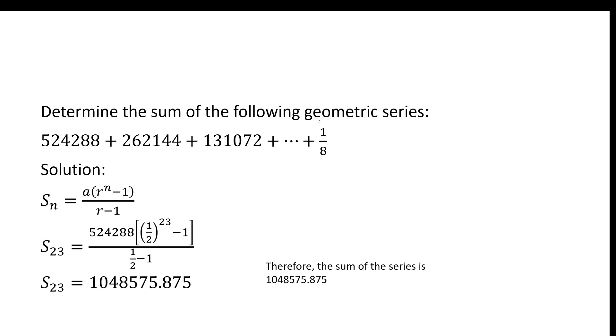Now, what's significant about that is that tells us that there are 23 terms in the series. We already know the A value is 524,288, and we know the R value is a half. And so now we're in a position to just plug in the numbers to our formula. And we see that the sum of the series is 1,048,575 and 7 eighths, or in other words, 0.875.